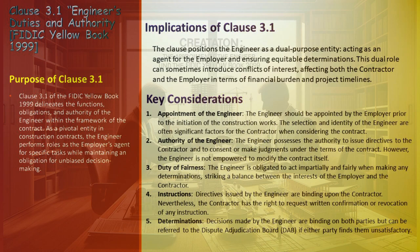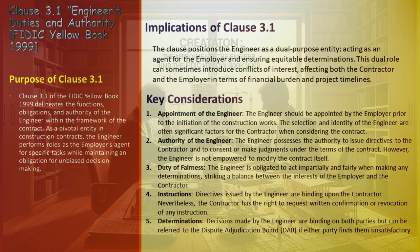Key considerations under Clause 3.1 include: the Appointment of the Engineer, where the employer's selection of the engineer is a critical early step significantly influencing the contractor's approach to the contract. The engineer holds authority to issue directives and make judgments within the contract's scope, but altering the contract itself is beyond their authority. Maintaining impartiality is a cornerstone of the engineer's role, balancing the interests of both the employer and the contractor. The engineer's directives are mandatory for the contractor, though provision exists for the contractor to seek written clarification or revocation of instructions. Decisions made by the engineer are binding but can be contested through the Dispute Adjudication Board (DAB) by either party.